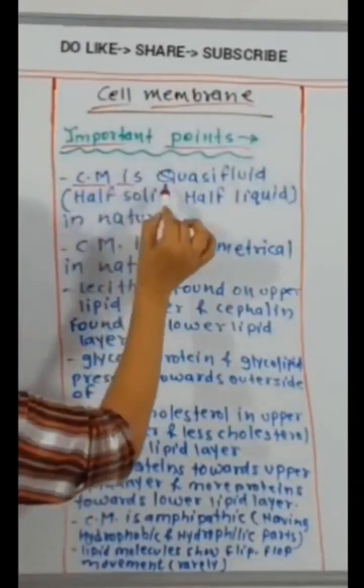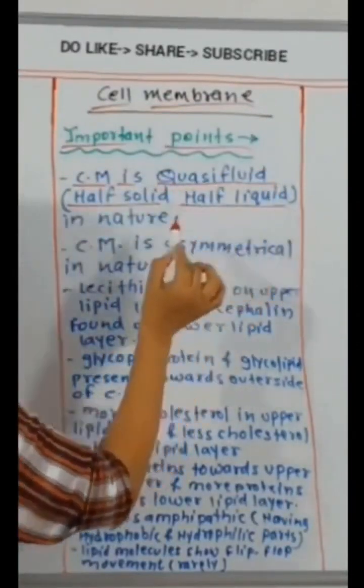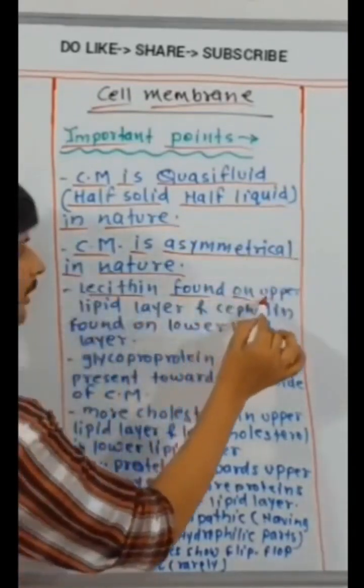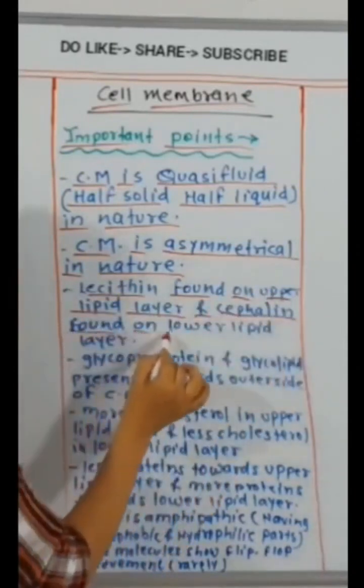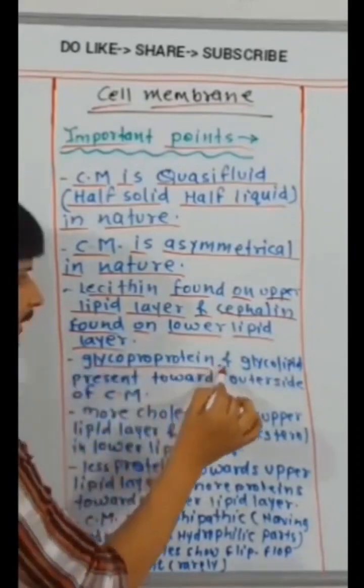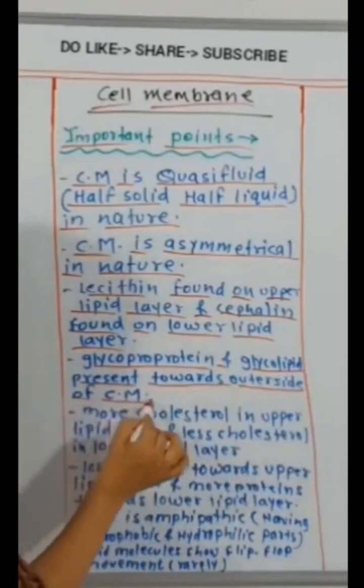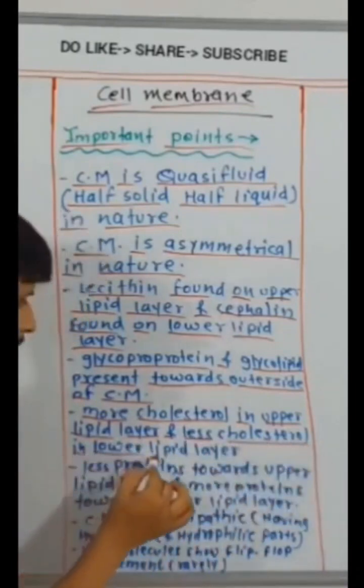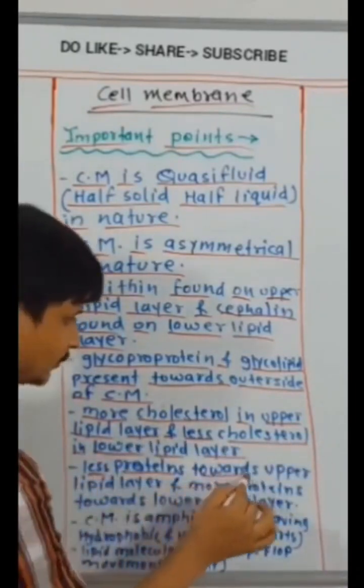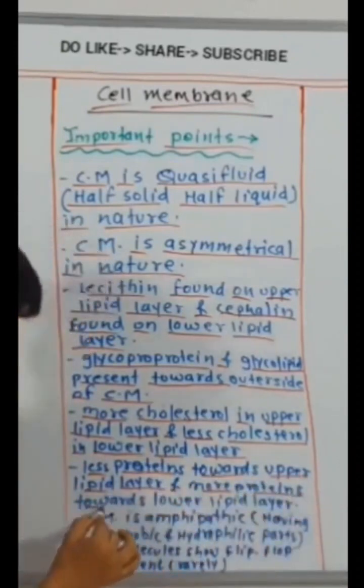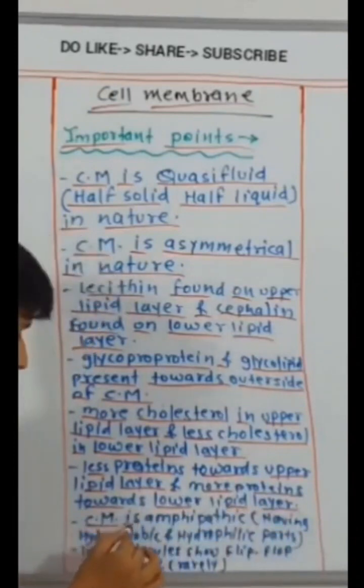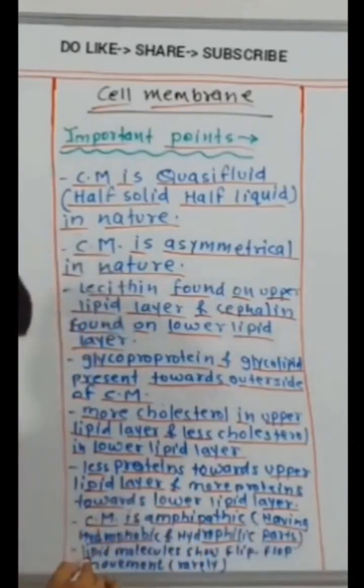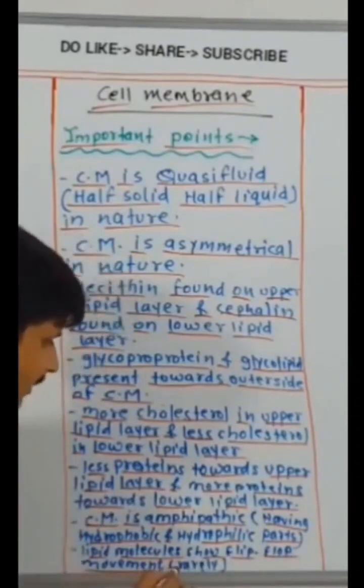Cell membrane important points. Cell membrane is quasi-fluid, half solid, half liquid in nature. Cell membrane is asymmetrical in nature. Lecithin found on upper lipid layer and cephalin found on lower lipid layer. Glycoprotein and glycolipid present towards outer side of cell membrane. More cholesterol in upper lipid layer and less cholesterol in lower lipid layer. Less proteins towards upper lipid layer and more proteins towards lower lipid layer. Cell membrane is amphipathic, having hydrophobic and hydrophilic parts. Lipid molecules show flip-flop movements rarely.